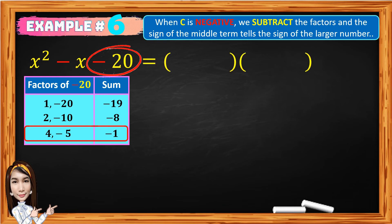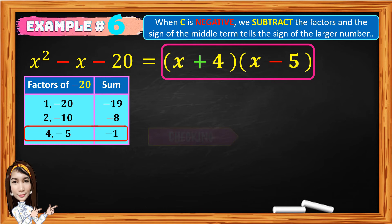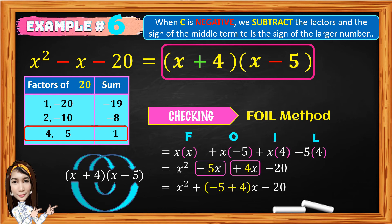The factor of x squared is x times x, and we have the factors positive 4 and negative 5. Take note that negative is the sign of the greater absolute value. So the factor of x squared minus x minus 20 is the quantity x plus 4 times the quantity x minus 5. To check if your factor is correct, we can use the FOIL method. Given the quantity x plus 4 times the quantity x minus 5, negative 5 plus 4 is negative 1 — and no need to write negative 1, it is understood that the coefficient is implicitly 1. So the product is x squared minus x minus 20. And you got it correct.